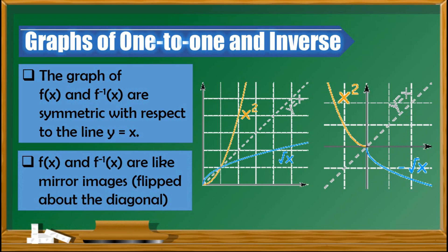f(x) and f⁻¹(x) are like mirror images. To check if they are really mirror images, flip about the diagonal. Imagine that you are flipping these graphs, and you will see that they will coincide — if you flip x² it aligns with √x. The same is true with the other graph: if we flip about the diagonal, this graph will coincide with that graph. That's the relationship of the graphs of one-to-one and inverse functions.